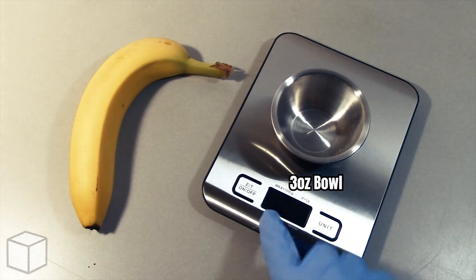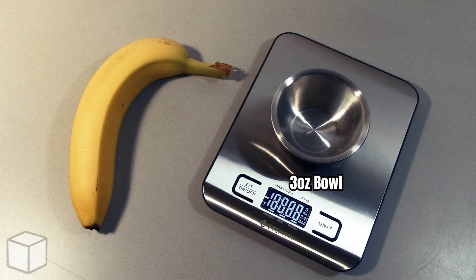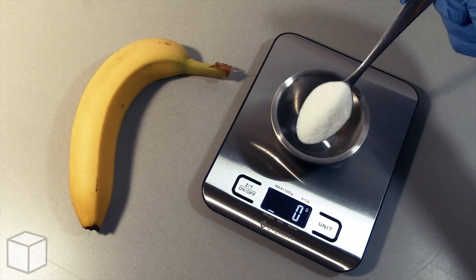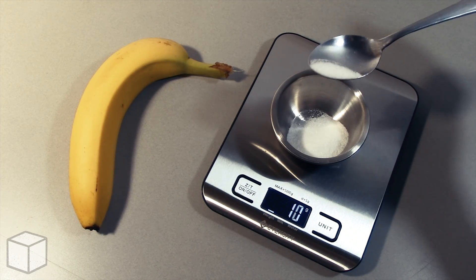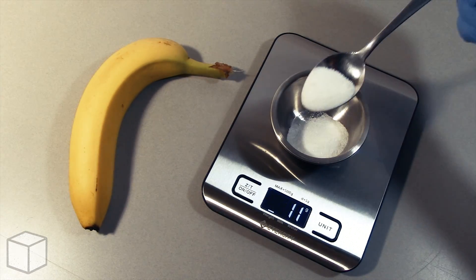To provide a visual of what that looks like, using this food scale I'm going to add granulated sugar into this small 3 ounce bowl until the total amount is equal to 14 grams.